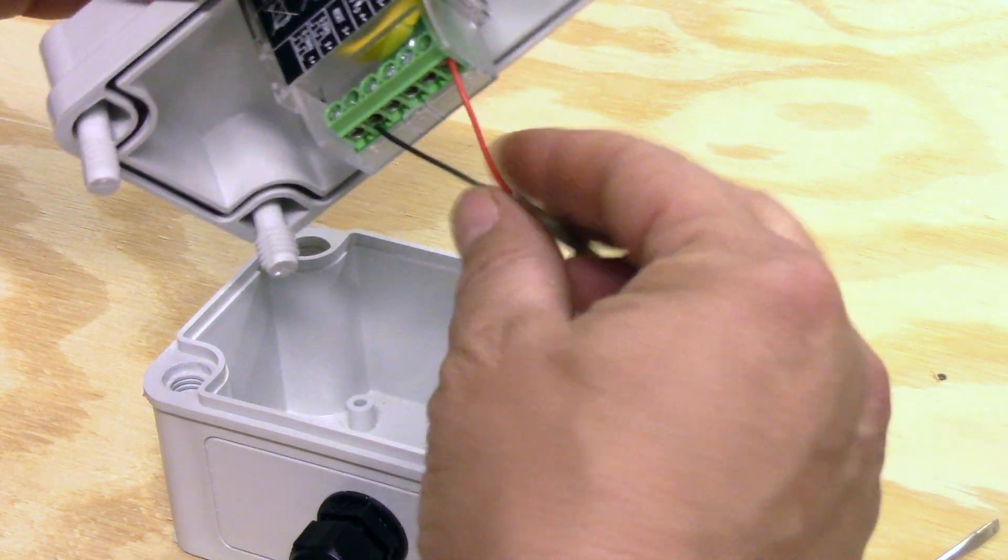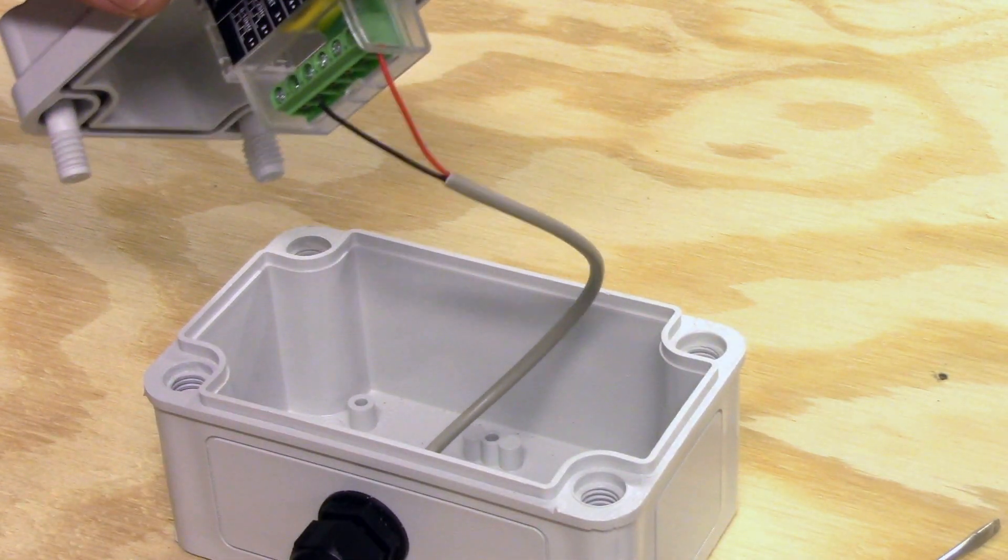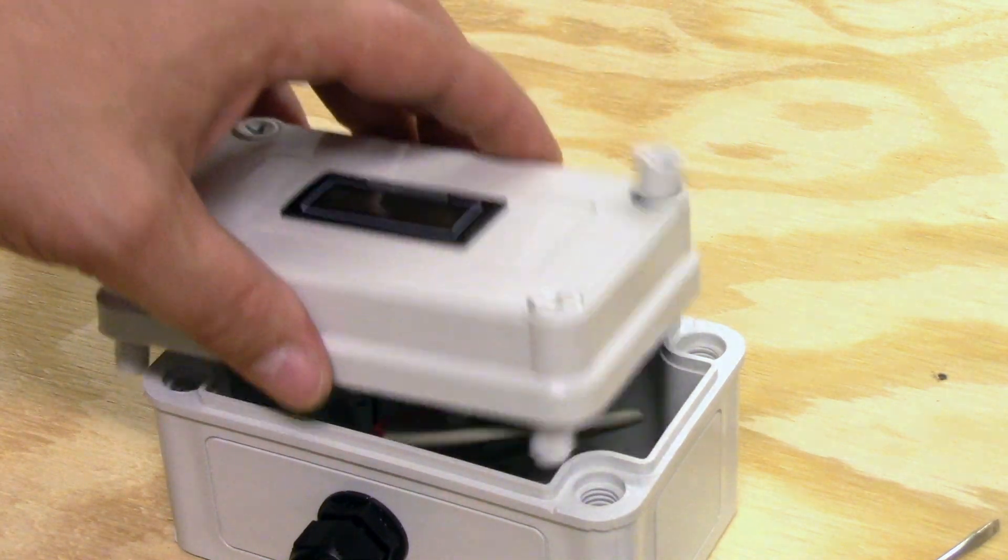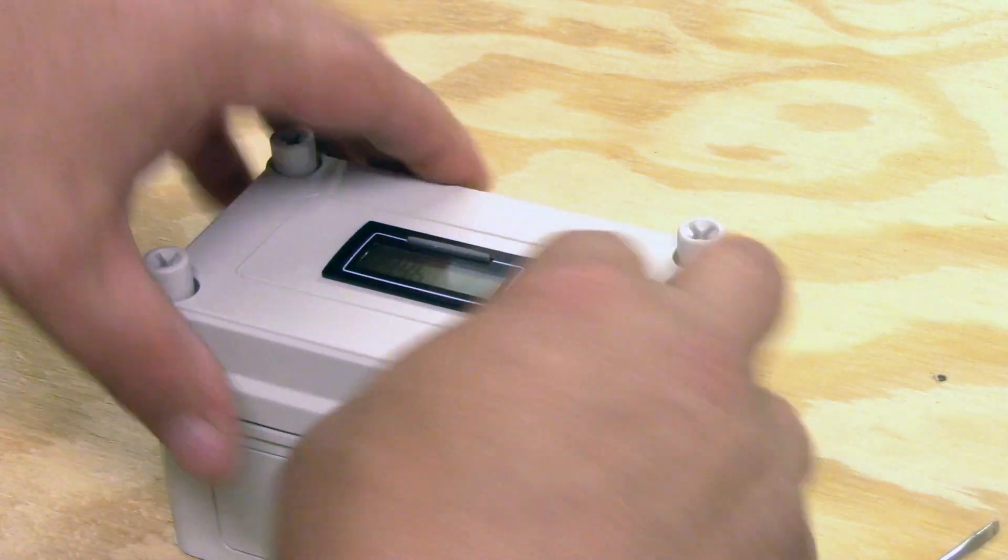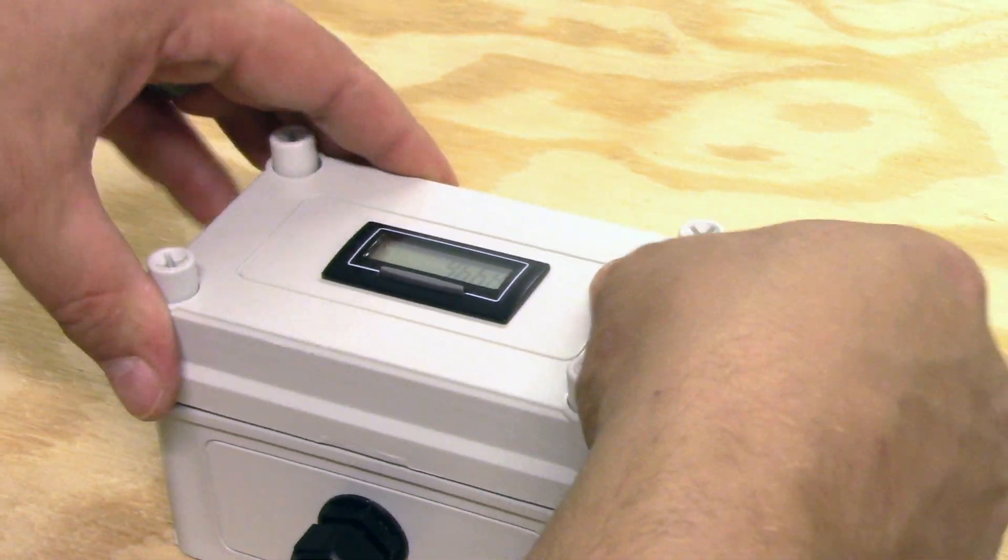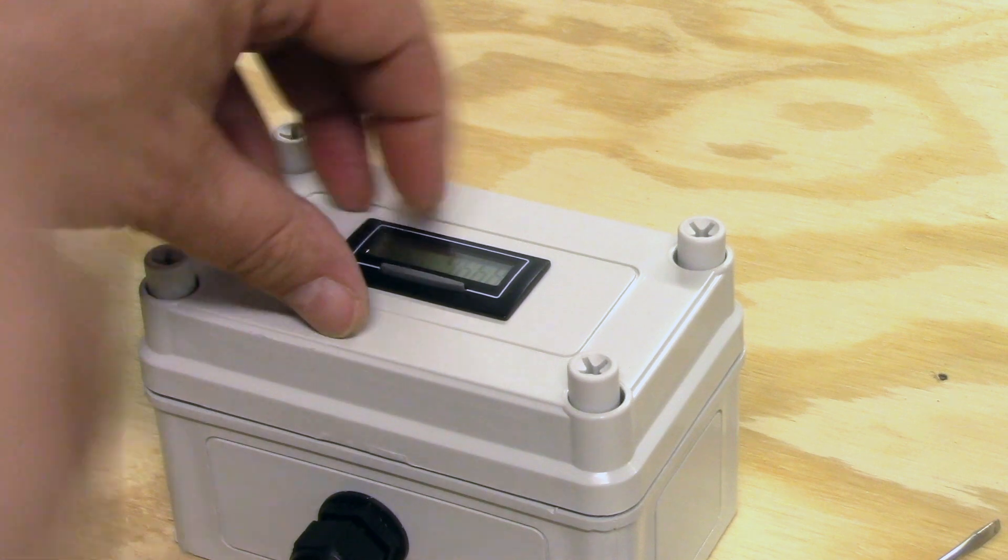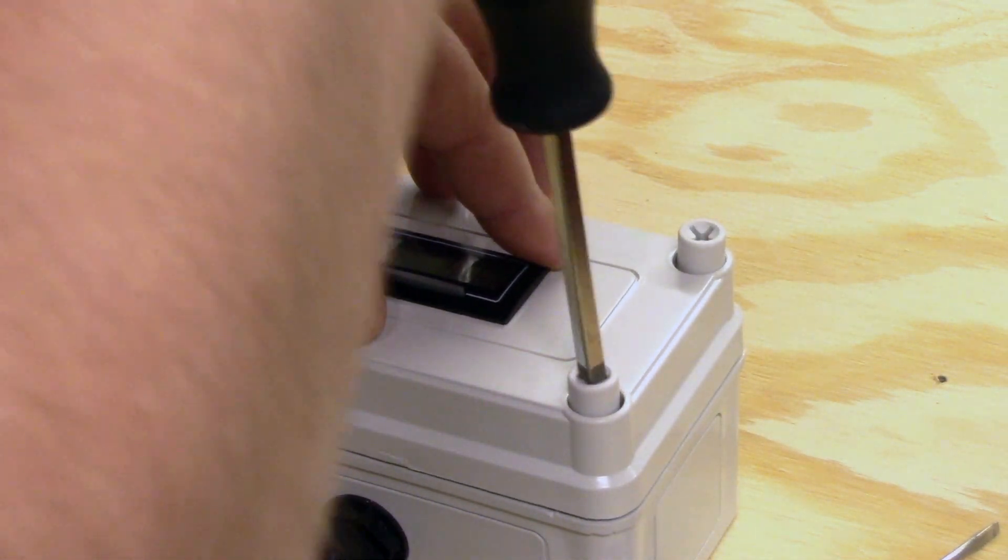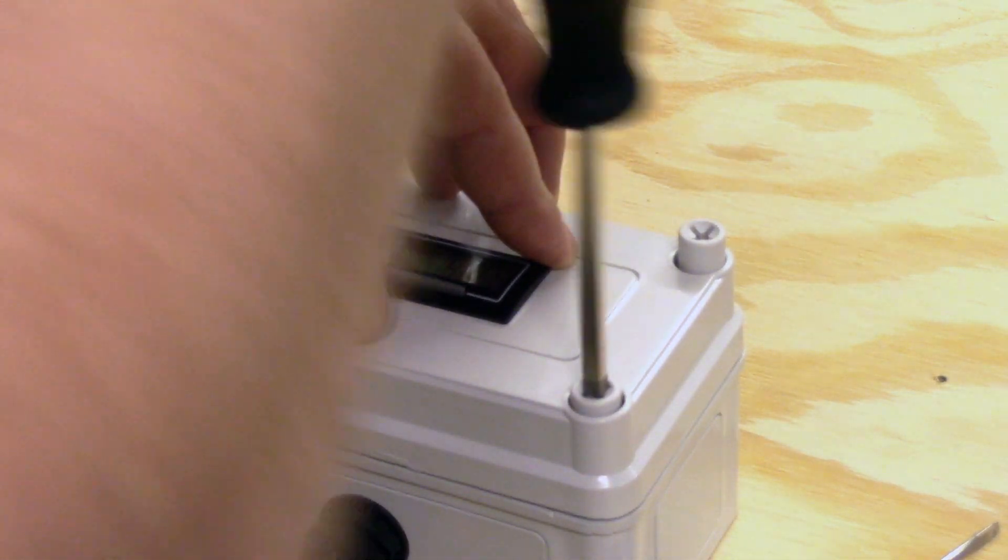Okay so the wiring is complete now we just need to close up the box. Make sure the o-ring seats, make sure the display is upright and tighten down these plastic bolts here.